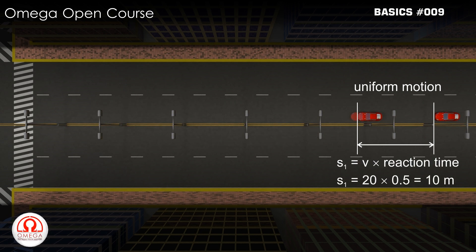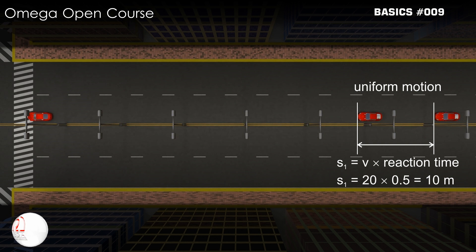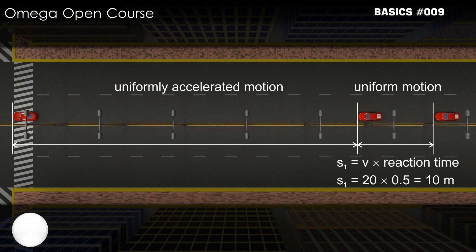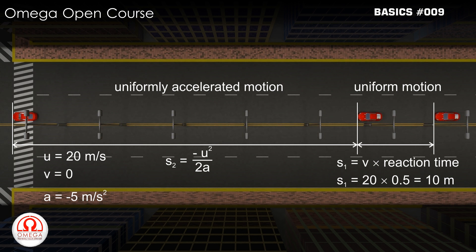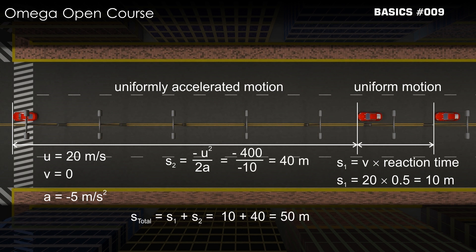Then you will apply the brakes and the car will decelerate at a rate of 5 meters per second squared. During this interval, the car will travel 40 meters. Thus, the minimum distance you will travel before coming to rest is 50 meters.